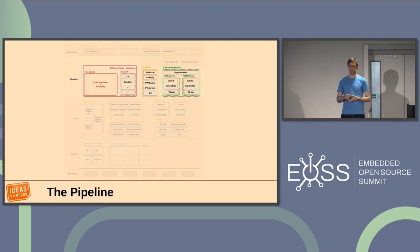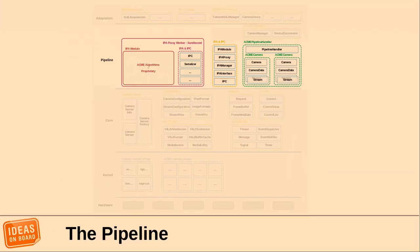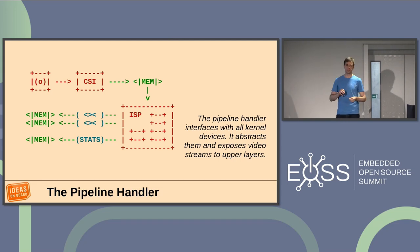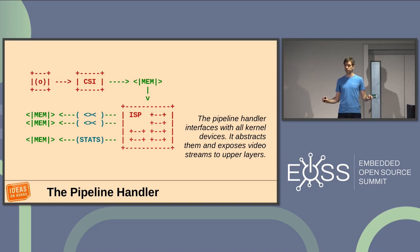If you're familiar with control theory and PIDs, you can imagine this as a PID on steroids: instead of one input and one output parameter, you have thousands of inputs, thousands of outputs, working in real time. That's the control loop of your system. The pipeline handler interfaces with the kernel, figures out all the V4L2 media devices it needs, and abstracts all of that towards your applications. Libcamera does not expose anything V4L2-specific to applications.